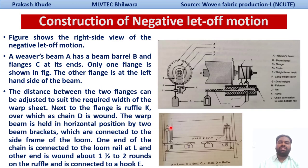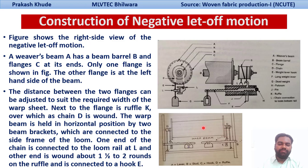So now you'll see the construction of your negative let-off motion. We are seeing the right-hand side view. The warp beam A has a beam barrel and it has flanges at its end. Only one flange is visible in this figure and the other flange is on the other side of the beam. This is your warp beam having two flanges at the end, and the distance between these two flanges has been adjusted to suit the required width of your warp sheet.